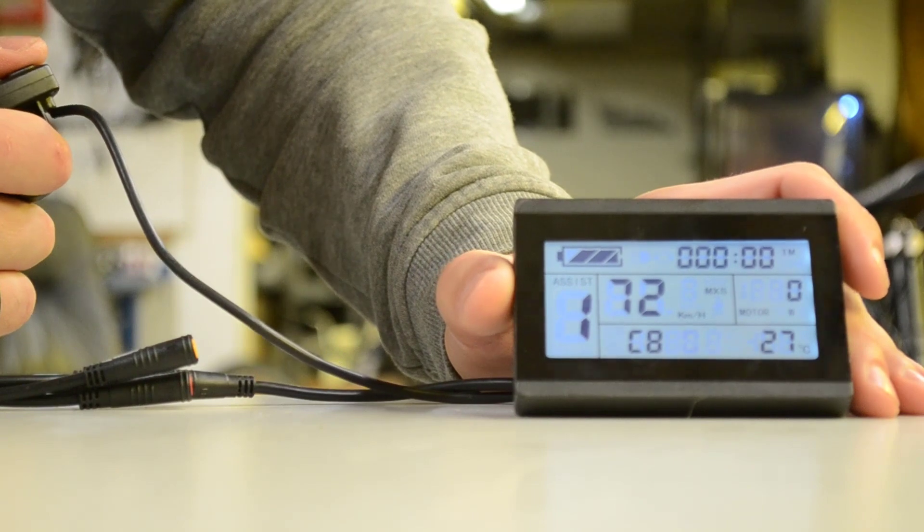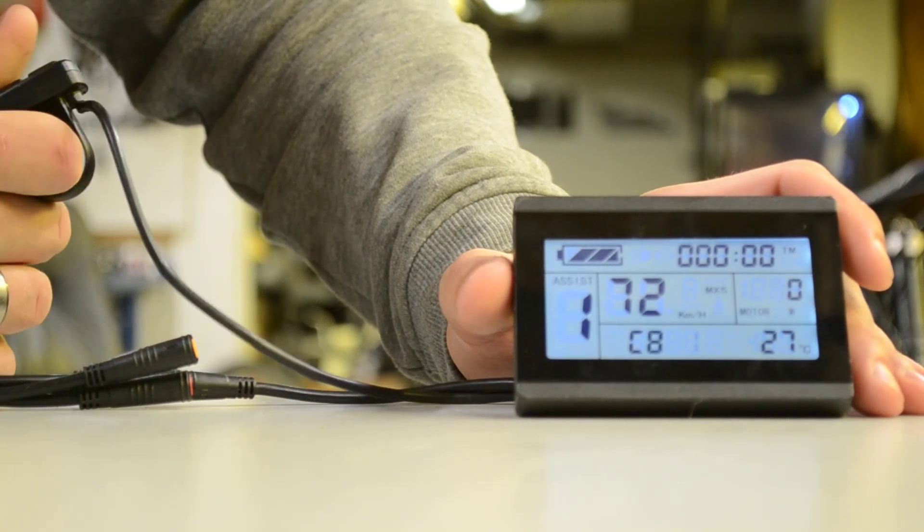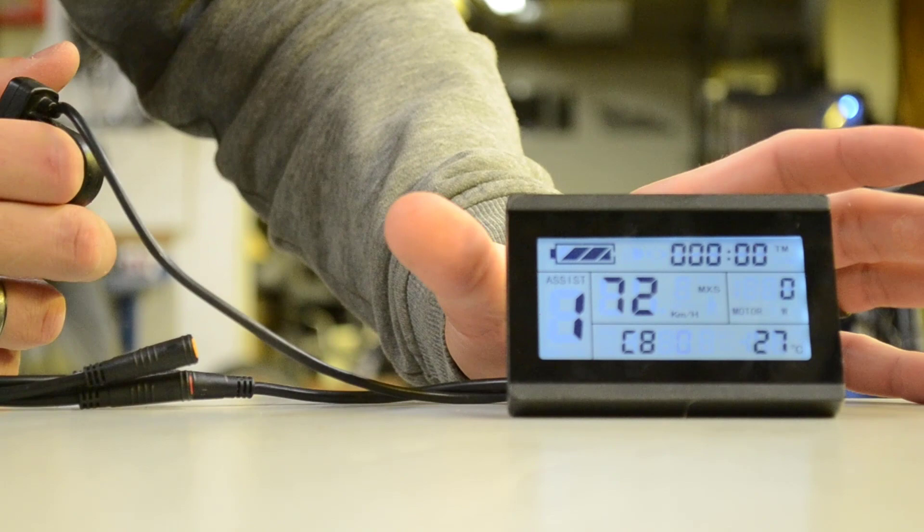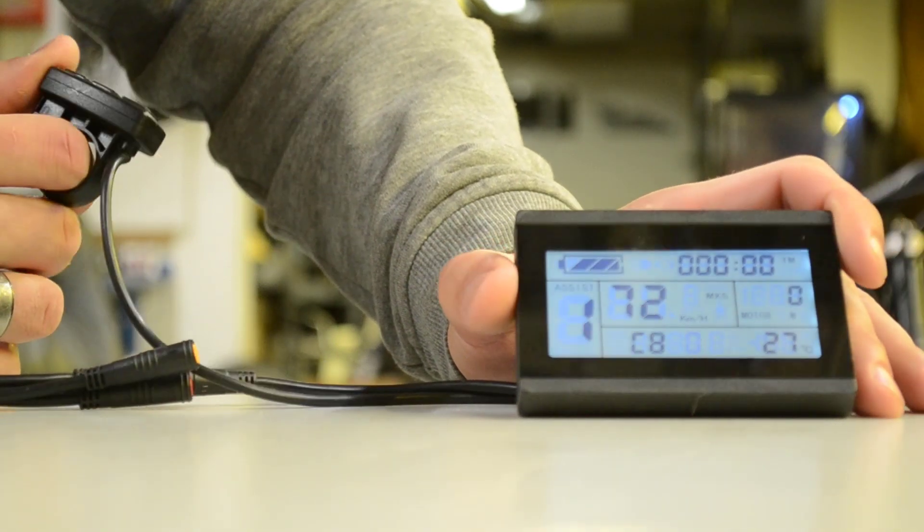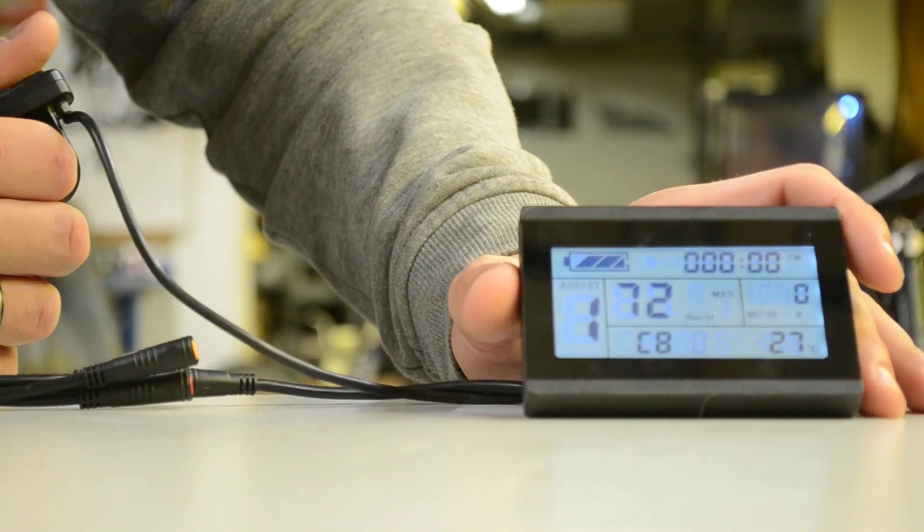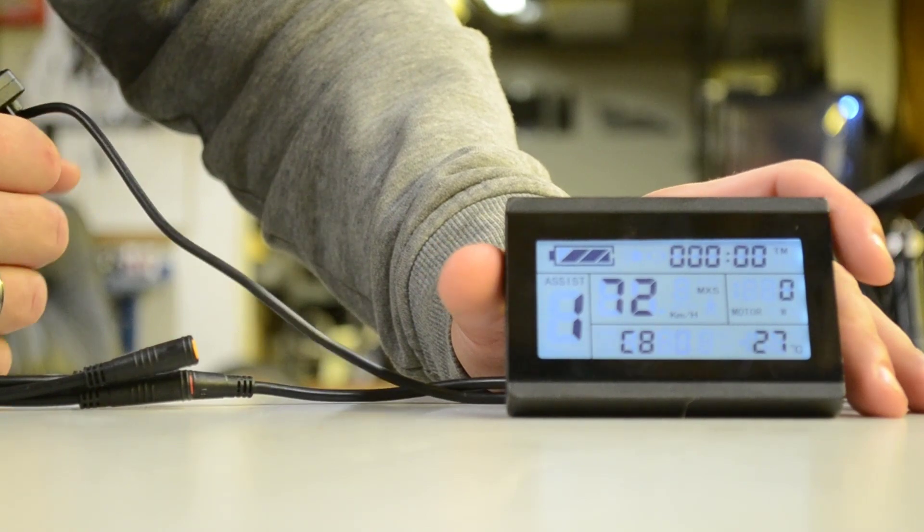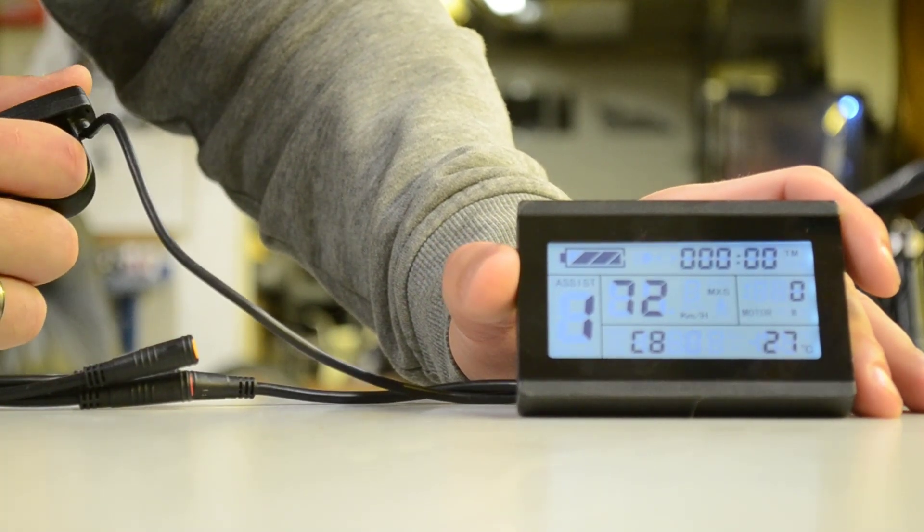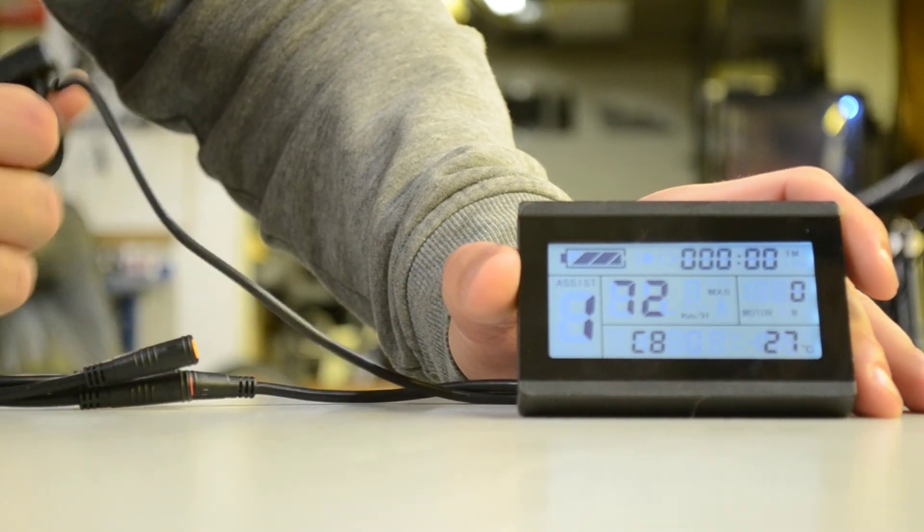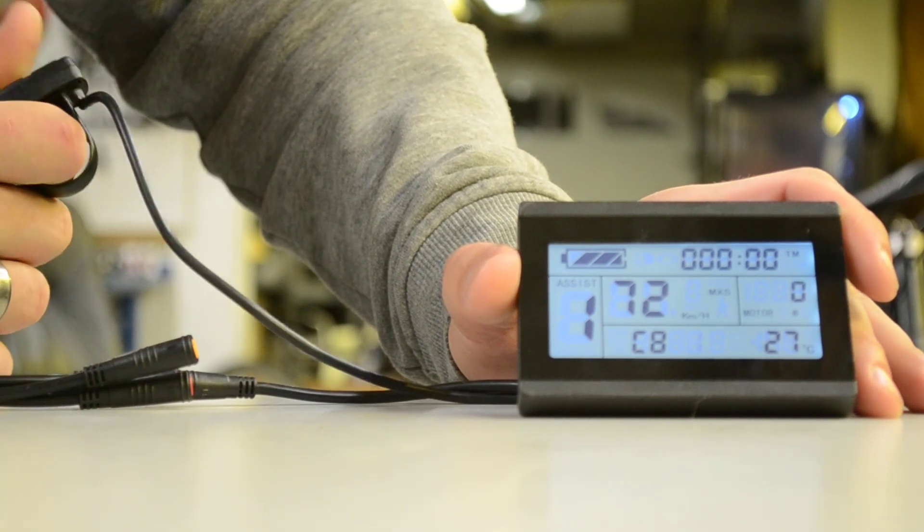C8 is enable motor temperature. Most of the motors don't have a motor temperature signal. So, usually you just leave this at zero, unless your motor does for sure have a motor temperature sensor inside. Then this will allow it to be displayed when it's set to one.